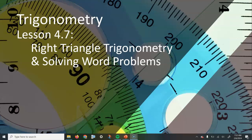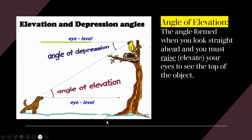There's some vocabulary that we need to be familiar with, so let's look at some of that vocabulary first. We have this idea of angle of elevation. Angle of elevation is the angle formed when you look straight ahead and you must raise or elevate your eyes to see the top of the object.